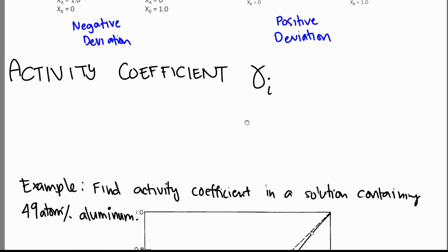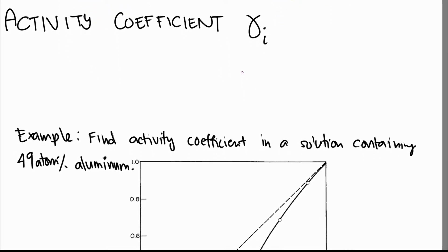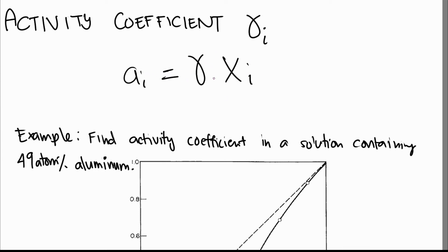Since for a non-ideal solution the activity is not equal to the mole fraction, a correction factor known as the activity coefficient γᵢ — the Raoultian activity coefficient — can be used to relate activity with mole fraction. The activity coefficient relates the mole fraction to the activity by multiplying by γᵢ. For ideal solutions where aᵢ equals Xᵢ, γᵢ will be equal to 1.